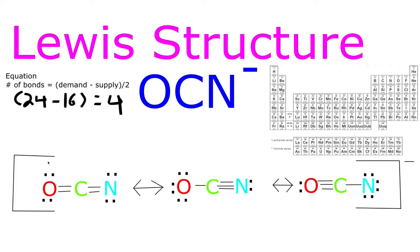Now if we count them all up: 2, 4, 6, 8, 10, 12, 14, 16 — which is our supply, so it checks out. Again: 2, 4, 6, 8, 10, 12, 14, 16 — checks out with our supply. And again: 2, 4, 6, 8, 10, 12, 14, 16. Perfect.